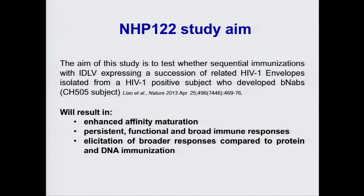The aim of the study that I'm presenting today is to test whether sequential immunization with IDLV expressing a succession of related HIV envelopes isolated from an HIV-positive subject who developed broadly neutralizing antibodies — namely the CH505 subject — will result in iterative affinity maturation, persistent functional and broad immune responses, and elicitation of broader responses compared to protein and DNA immunization.